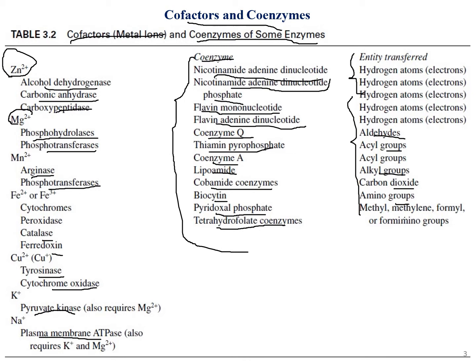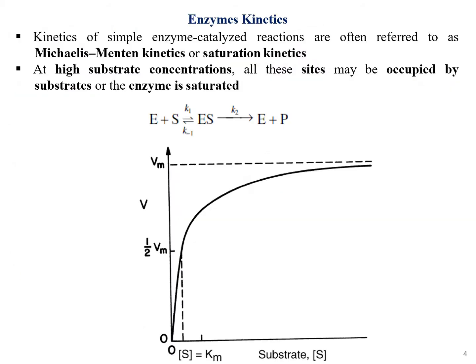These coenzymes are involved in various entity transfers, which can be aldehyde, alkyl, carbon dioxide, amino, one-carbon (methyl, formyl, and related groups). These are the types of group transfers associated with the cofactors and coenzymes of these enzymes.